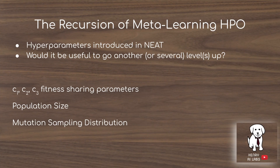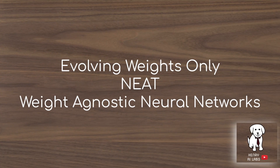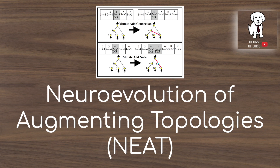An interesting consideration is that even NEAT, as a hyperparameter optimization technique, has its own hyperparameters: fitness sharing parameters, population size, and mutation sampling distribution. One could abstract another layer up and have an evolutionary algorithm optimizing an evolutionary algorithm optimizing a neural network. The progression goes from evolving weights only, to NEAT evolving weights and topology, to recently developed weight-agnostic neural networks which focus only on the topology — and are surprisingly successful, making neural networks work even when every single parameter is the same. Thanks for watching; please subscribe to Henry AI Labs for more on deep learning, AutoML, neural architecture search, and neuroevolutionary algorithms.